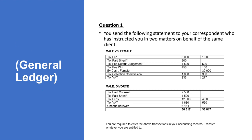You are the instructed attorney — you are the one performing. The first matter is between Male and Female. There are transactions which took place, summarized in the form of a statement. The other matter is Male vs. Male — they decided to divorce for some reasons. There are costs involved, income, and other financial-related matters. We need to know how to account for all of this.